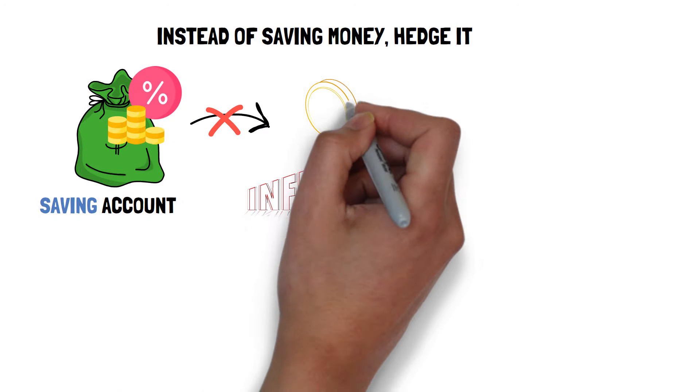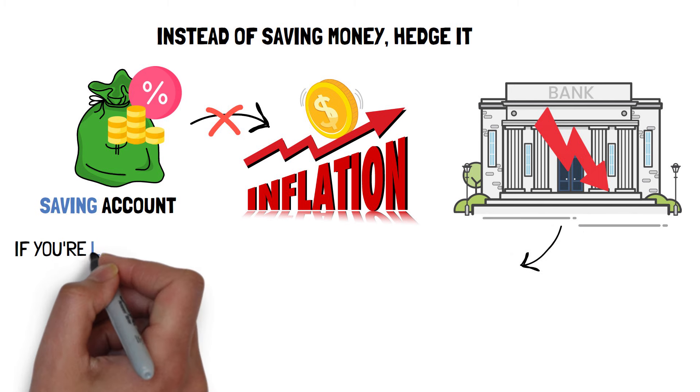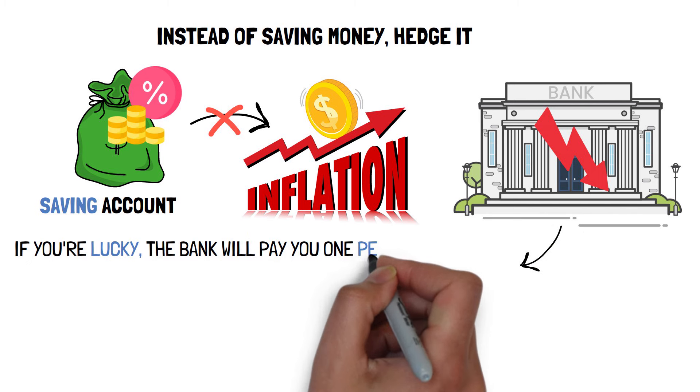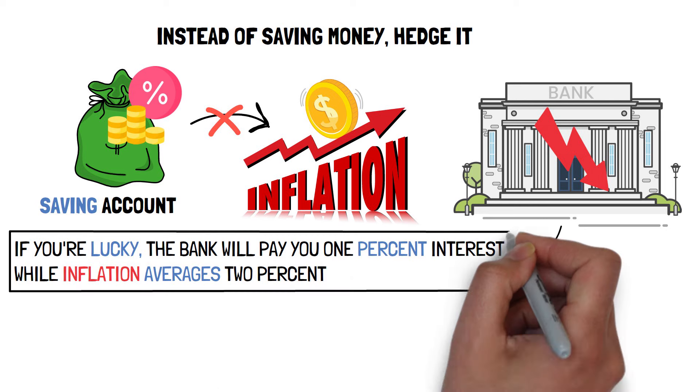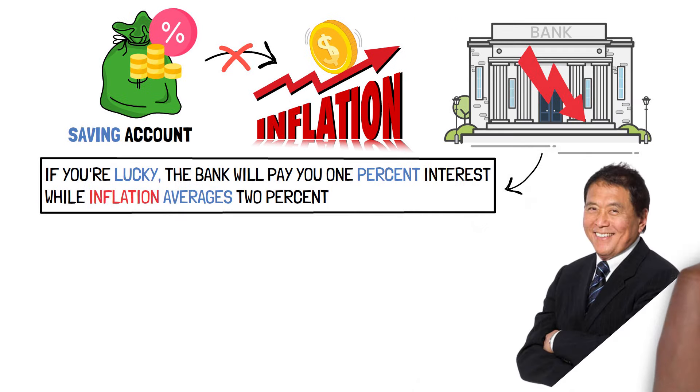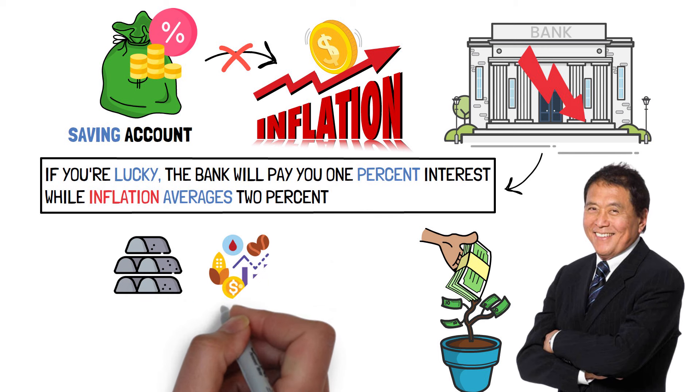Thus, the value declines the longer it is held in cash or in a bank account. If you're lucky, the bank will pay you 1% interest while inflation averages 2%. Instead of saving money, Kiyosaki suggests hedging it by investing in assets such as precious metals, commodities, or real estate.